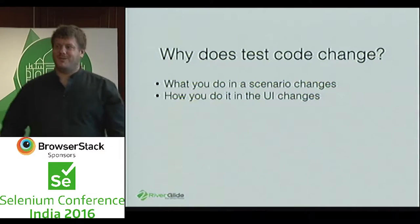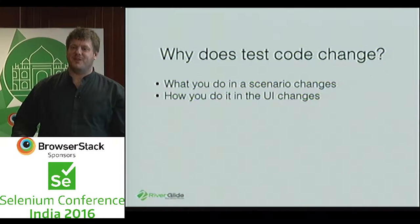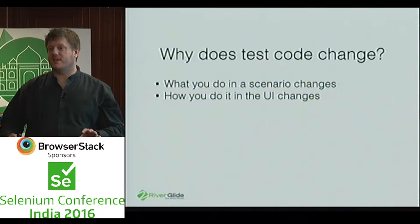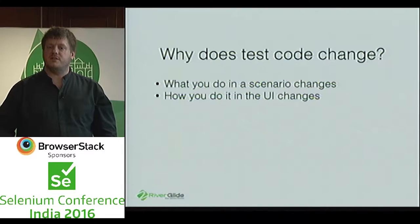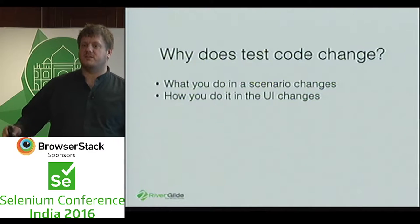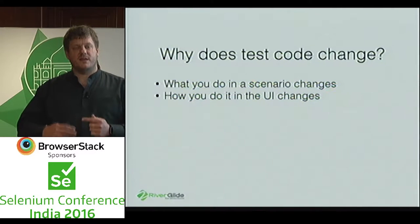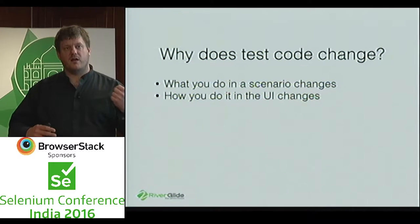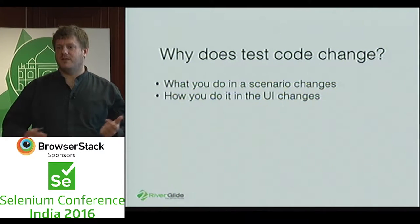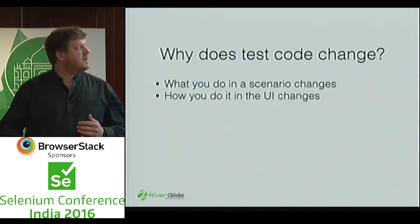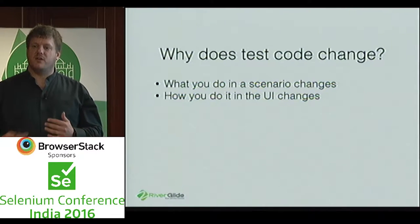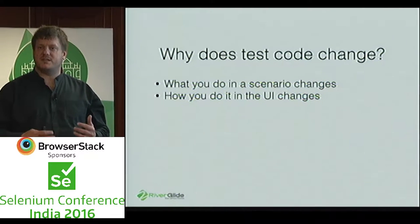When we're working with our tests, quite often we'll find that certain things have to change fairly regularly. It might be that the UI changes, or it might be that something we have to do changes the actual method or task that we have to perform. What that can lead to is one of the most common complaints about testing: that the tests are brittle. But it's not really that the tests are brittle — it's more that there's not enough communication between the people who are doing the testing and the people who are writing applications.